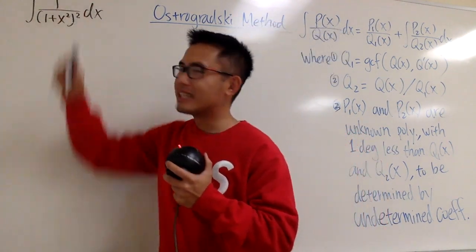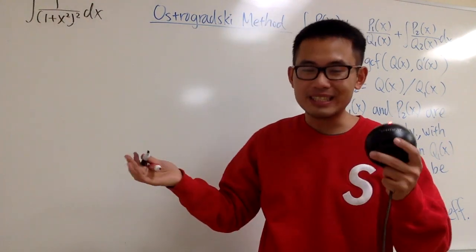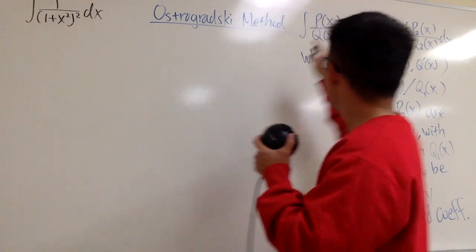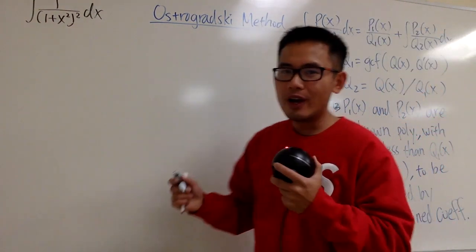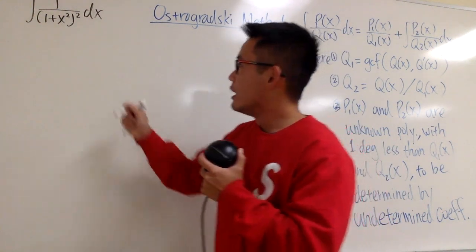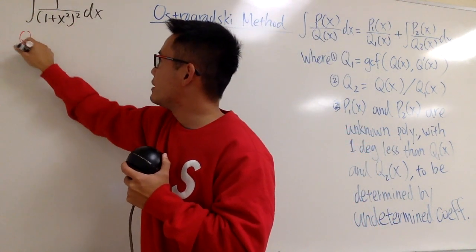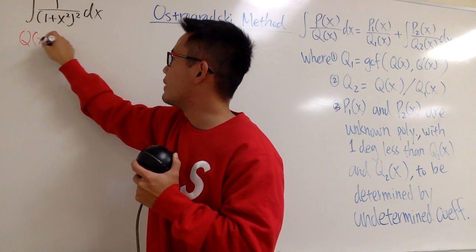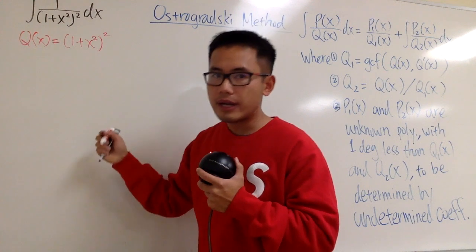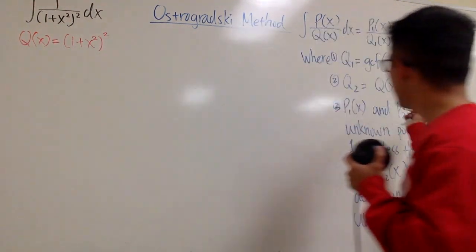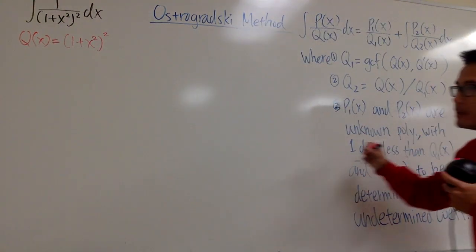First of all, the good thing is that on the top we just have a 1, so that's p of x, original p of x. It's not p1 nor p2. Focus on the denominator first. You see that the denominator, I will just look at that as q of x, which is 1 plus x squared and then squared. What it says right here, I have to get its derivative.